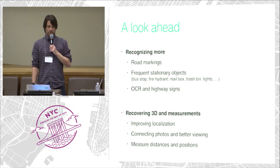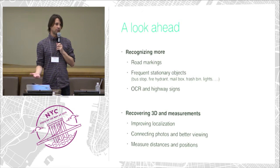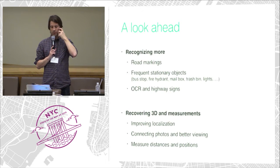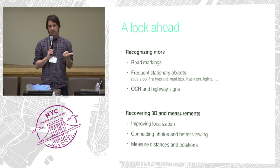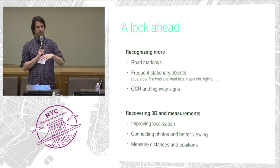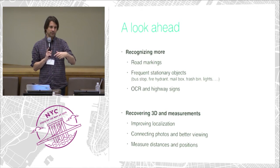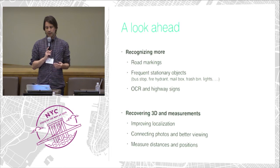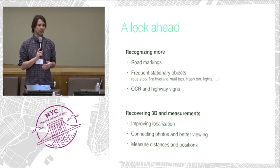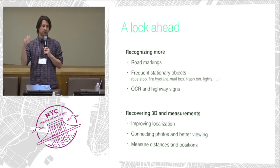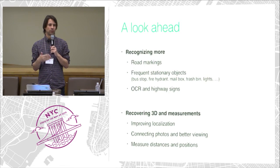This is still early days — we've been live a little more than a year — but we want to recognize even more things in the images. Next on the list: road markings — anything on the road surface like number of lanes, arrows, stop lines, pedestrian crossings. Also frequently occurring stationary objects like fire hydrants and bus stops. And we want to read signs as well, like highway signs. All of this content will also be made available for OpenStreetMap.